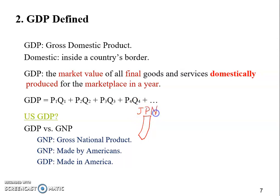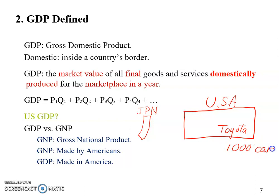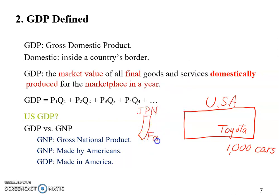Here on the drawing: JPN stands for Japan, or Japanese territory. This big box stands for the USA. We have a Toyota factory in the U.S. — I believe there's one in Mississippi — producing 1,000 cars. And in Japan there's a Ford factory, which produced 1,200 cars.